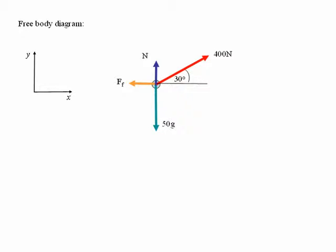Now the important point to notice in this problem is that the normal reaction force N is not equal to the weight of the crate because the 400 newton force has a component in the vertical direction.